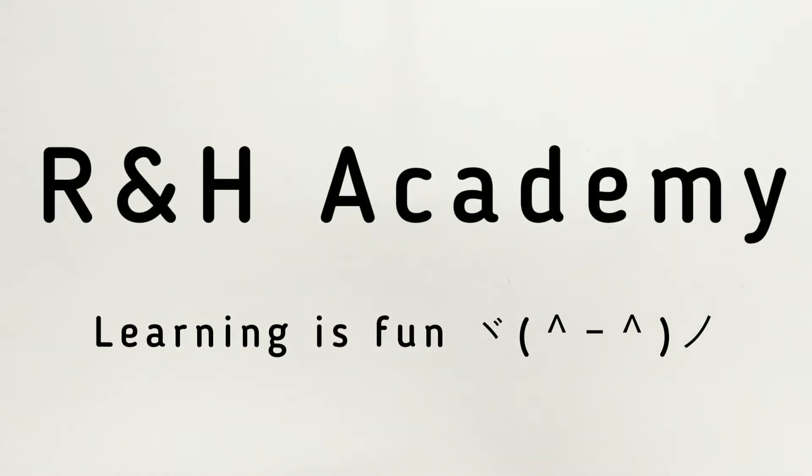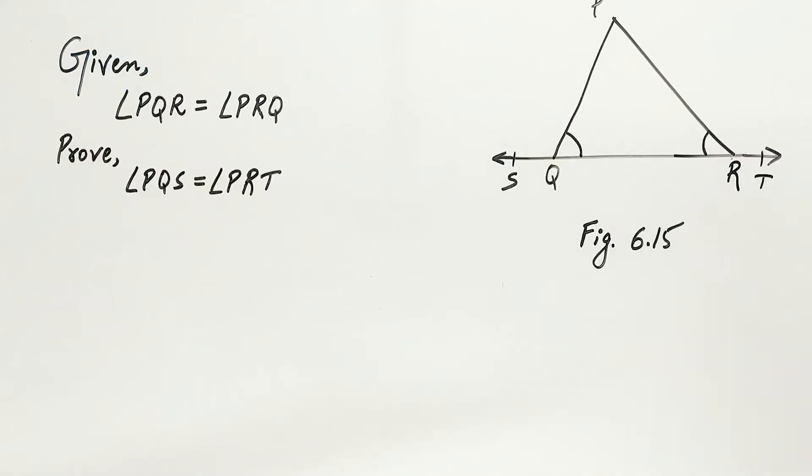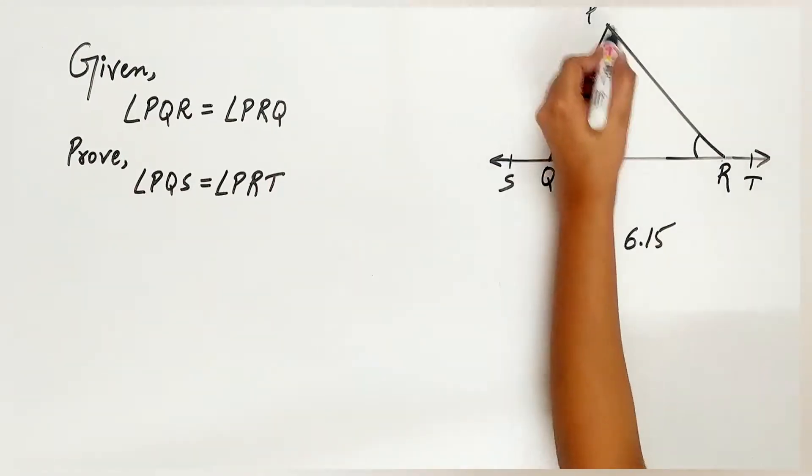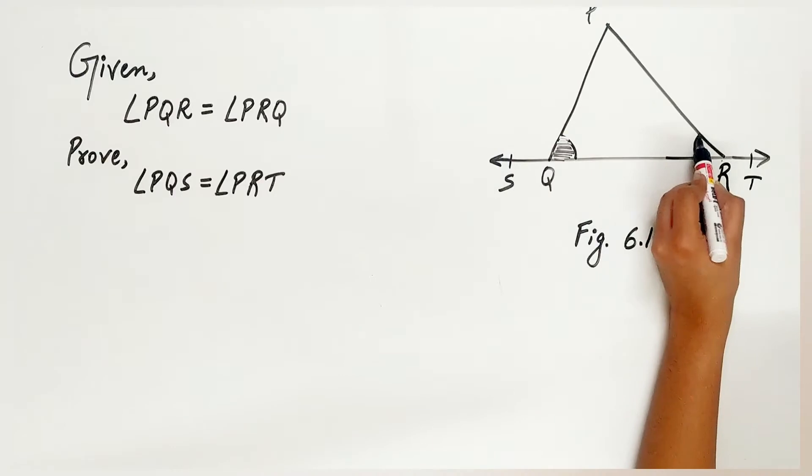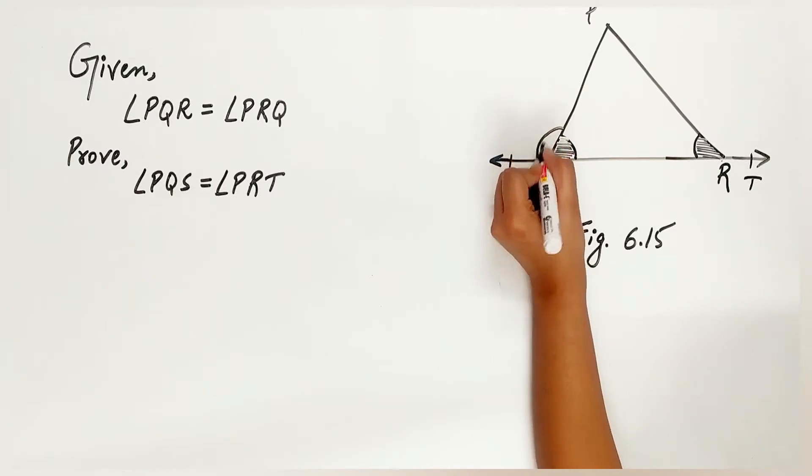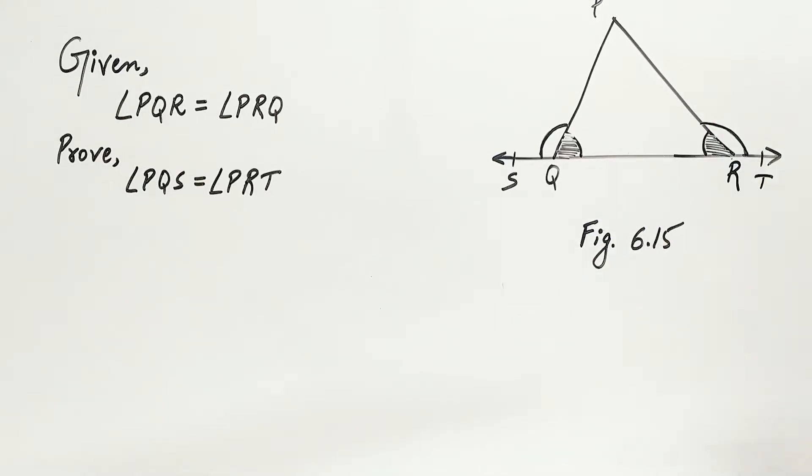Welcome to our H-Calcule channel. Question 3 of Exercise 6.1 says: Angle PQR is equal to angle PRQ. We have to prove that angle PQS is equal to angle PRT. So let's do it.